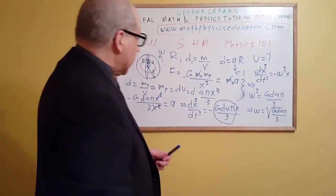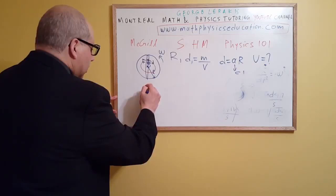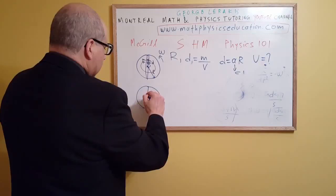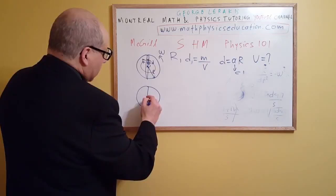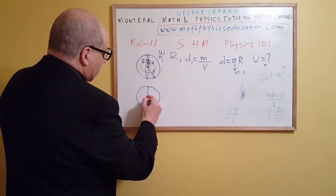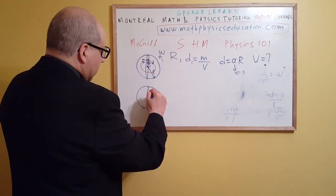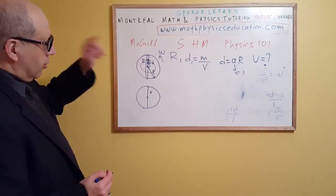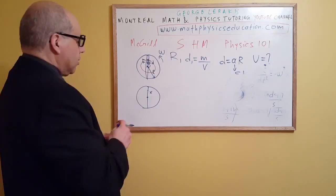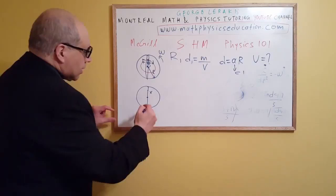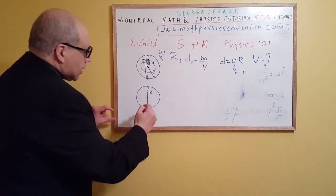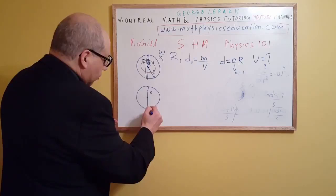Let's redraw the planet diagram to show something. This is the center of the planet, and let's say here is the message at distance x from the center. The omega we found is equal to the angular velocity of an object moving around the planet. Let's say an object starts from the top and moves with angular velocity omega.